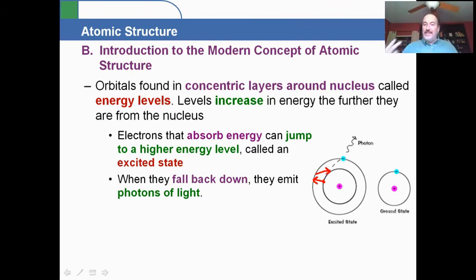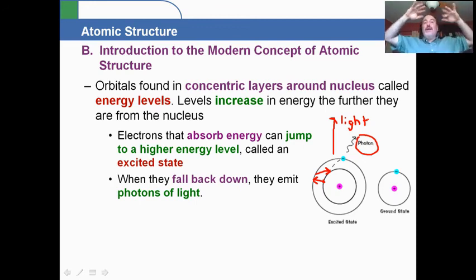But the energy it did have gets released in the form of a photon of light. So light is emitted. That's why anytime you get something really hot, like the wires in a toaster, and it starts to glow, the reason it starts to glow is because you've gotten the electrons all excited. They jump up and they fall back down, jump up and fall back down, and they keep emitting light.